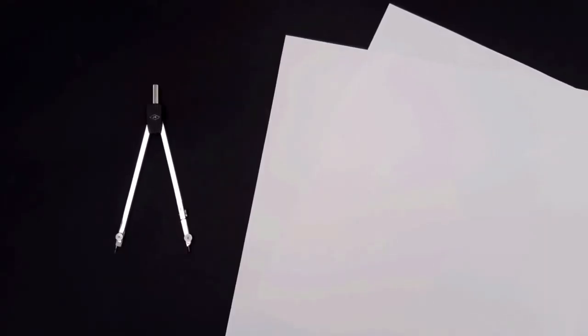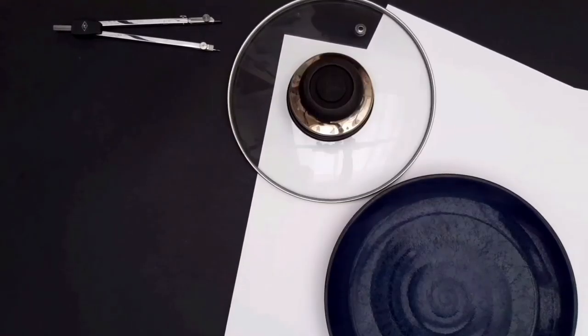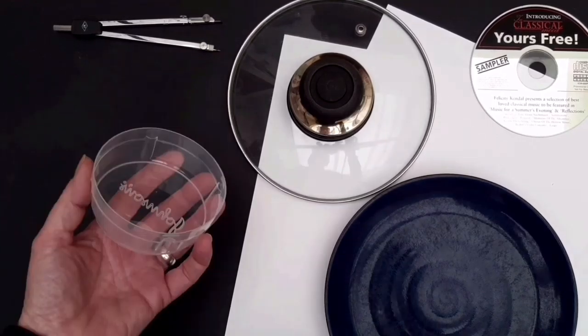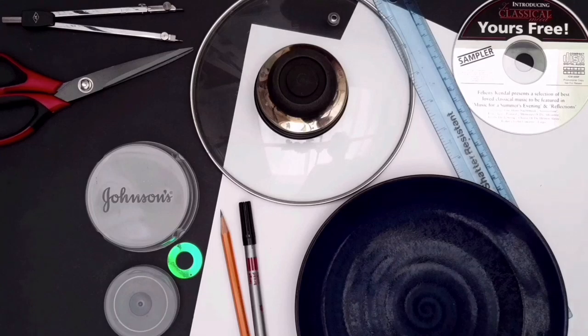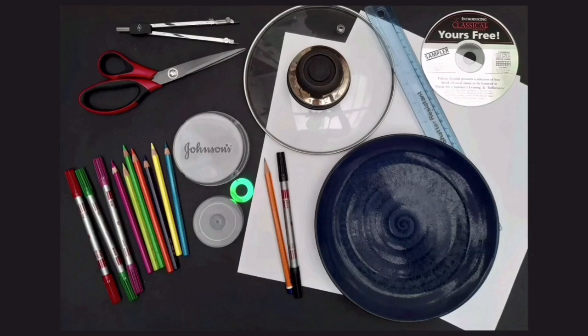So to start you'll need two pieces of paper, a compass if you have one, but if not some different sized round objects. I'm going to use a plate, a saucepan lid, an old CD and I have some plastic lids as well. You'll also need scissors, a ruler, a pencil, a few colored pencils and some markers.